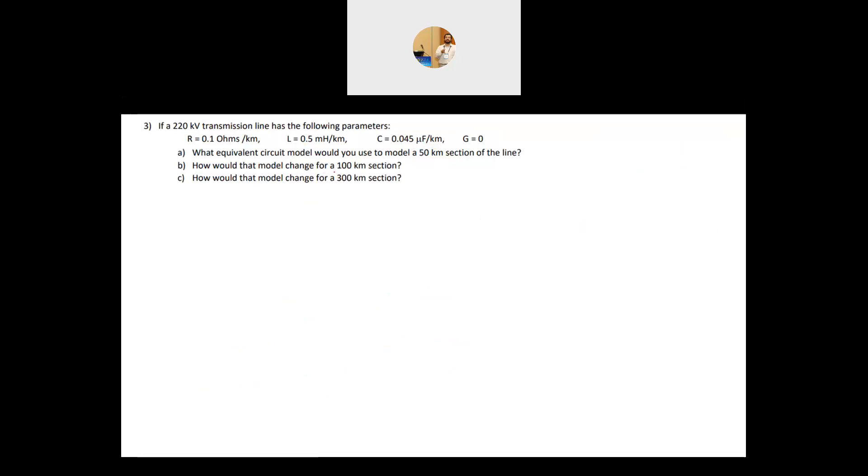Then after that, it says how would the model be if we have 100 kilometer? If it is between 80 to 240, this is a medium line. Now once you have the medium line, then the model that we use for the short is a bit modified here, and we will have the shunt capacitor. These are the ones I talked to you about before. This is the one that we calculate, and this is we call it the pi model. This is the pi model because it looks like the pi.